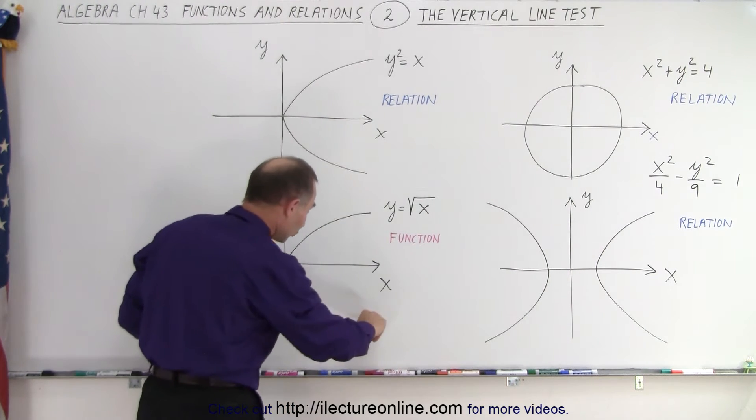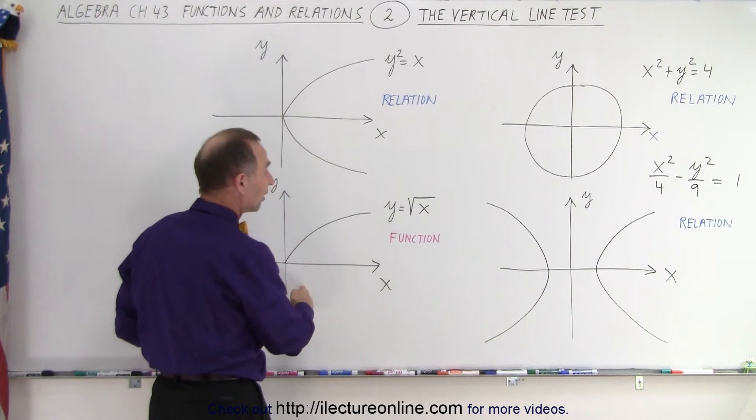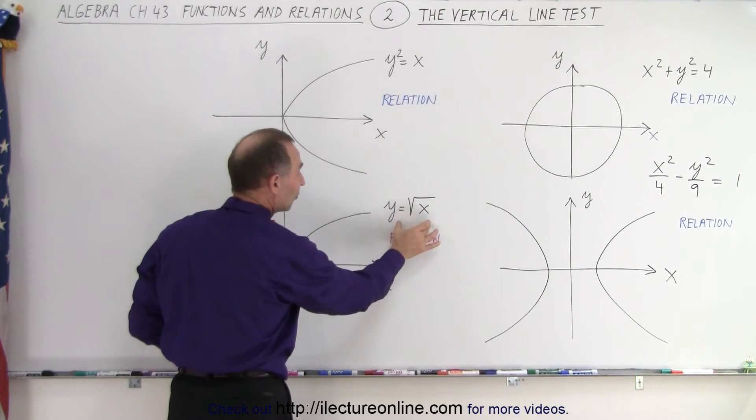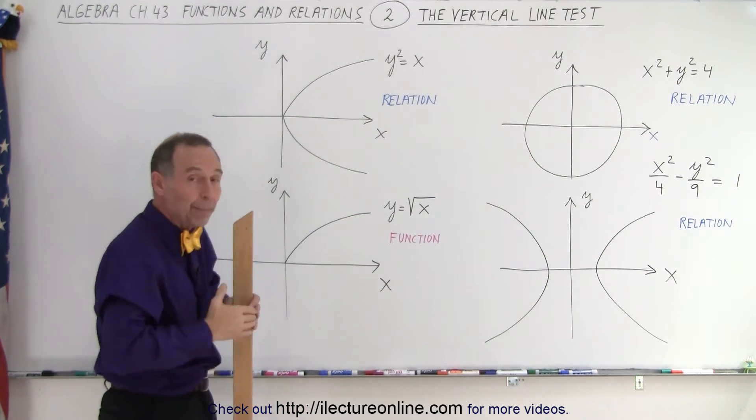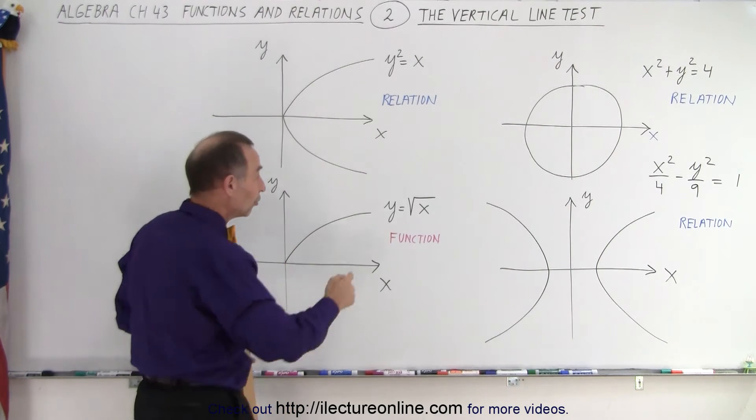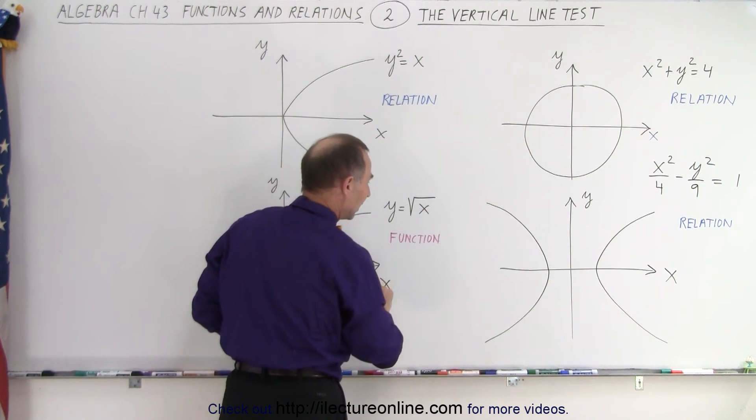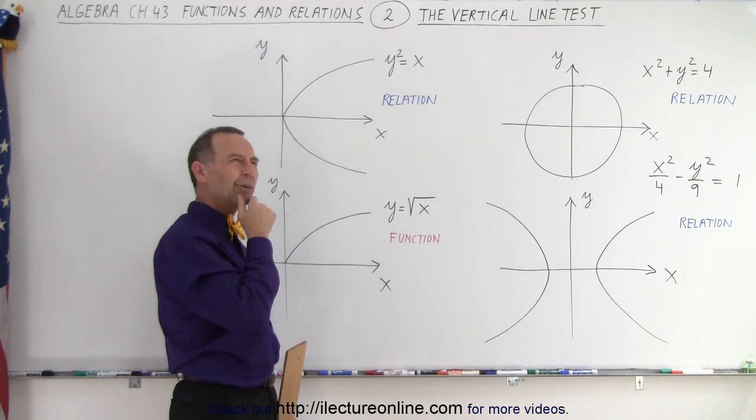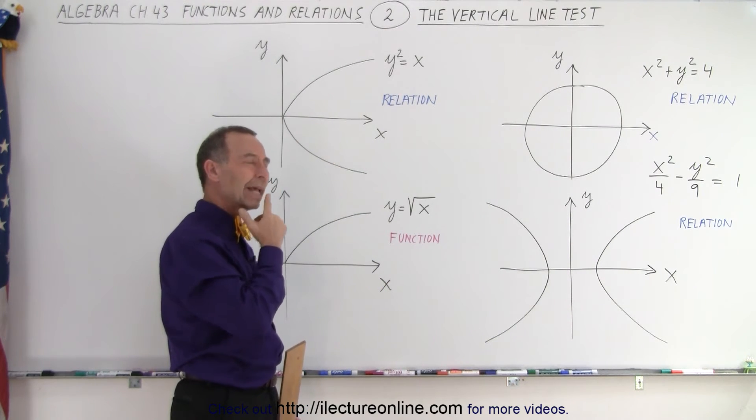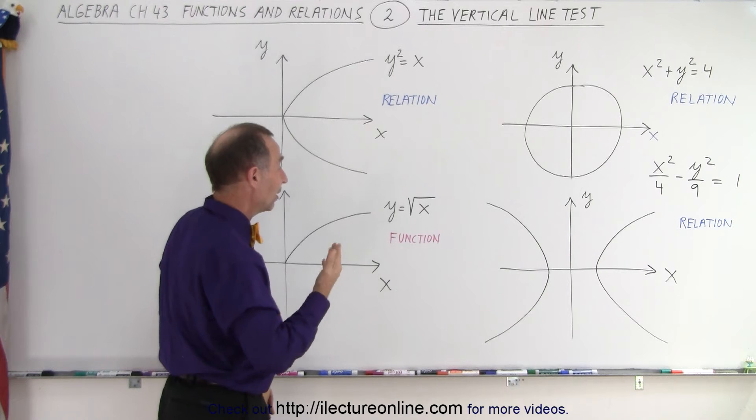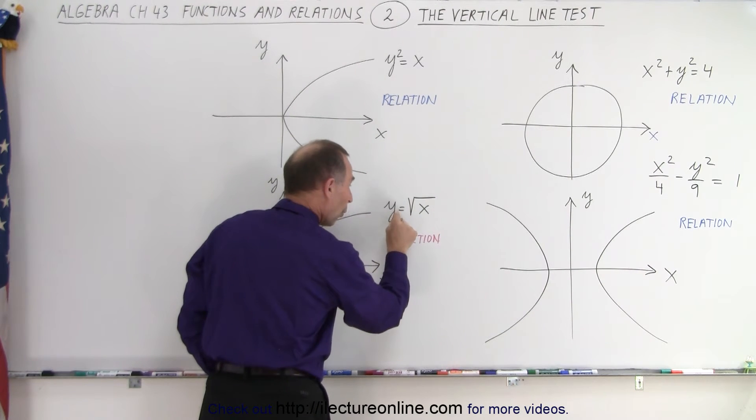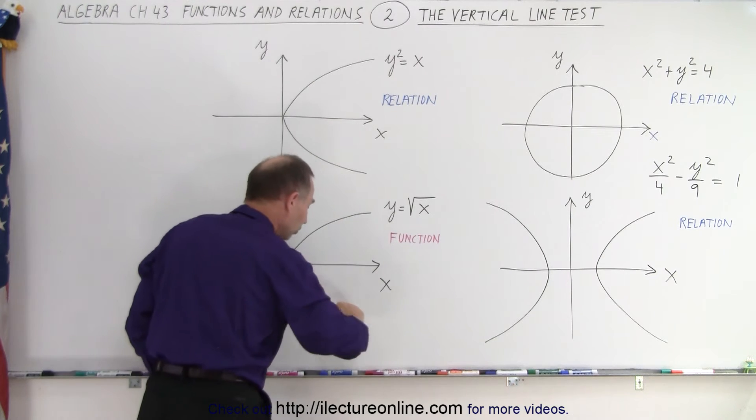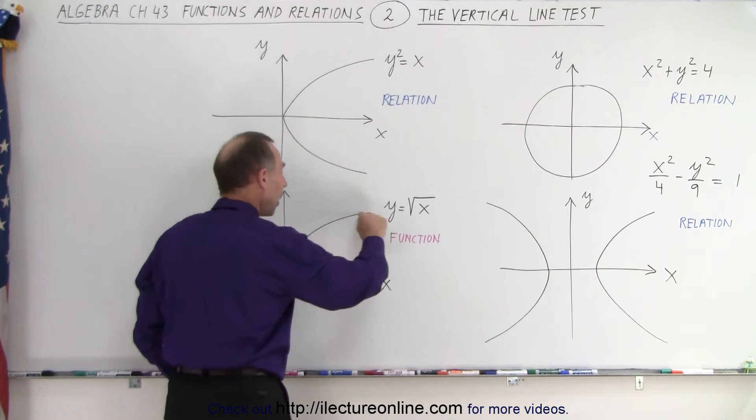The reason why that's missing is, if we write it like this, the square root of something is defined as having to be positive by definition. The square root of x cannot be a negative number—that would be imaginary. So y cannot be negative, and the bottom part of the curve is missing. We only have the top part of the curve.